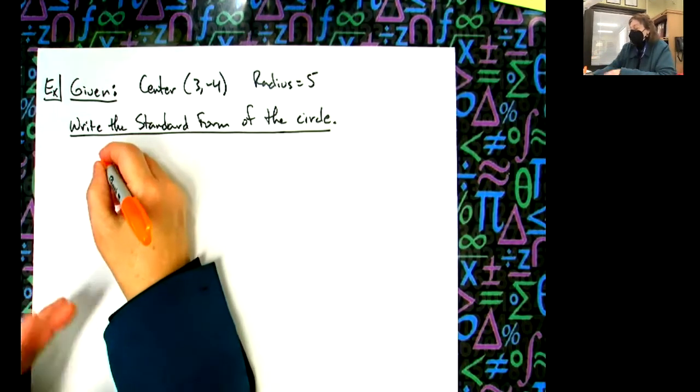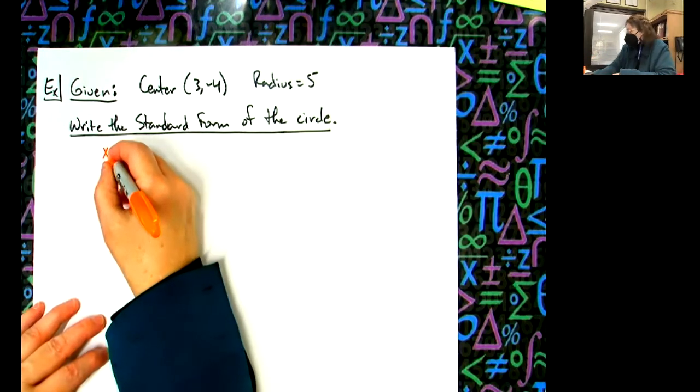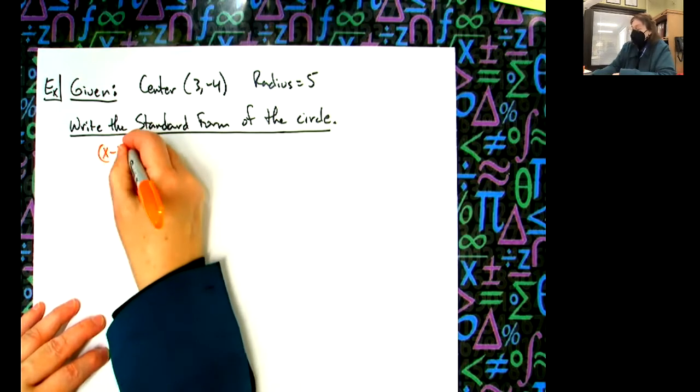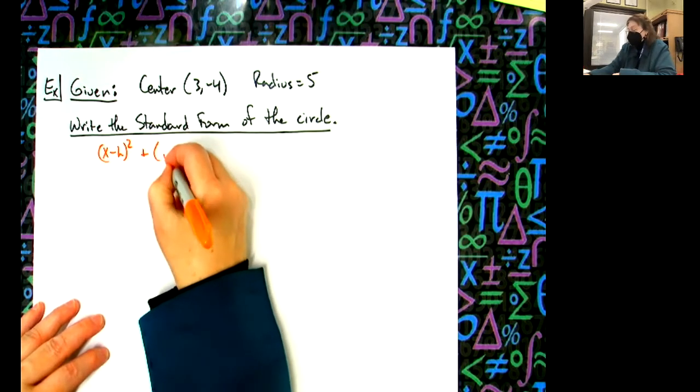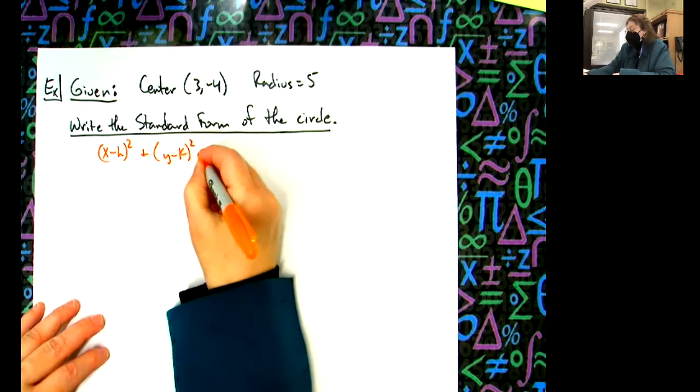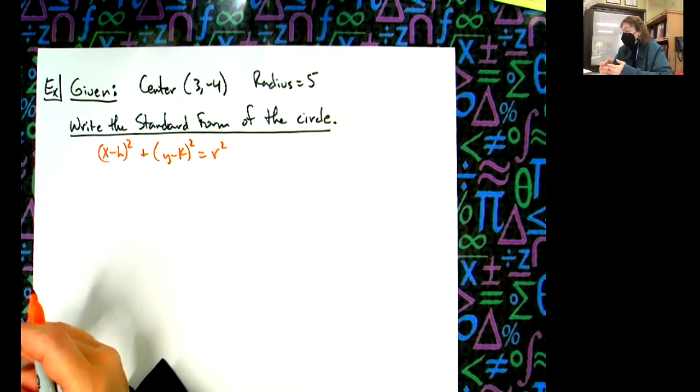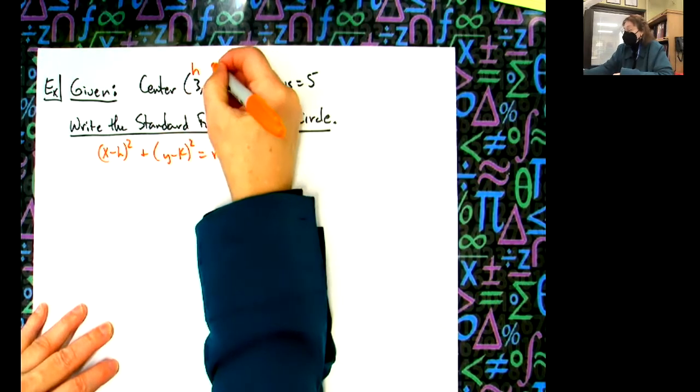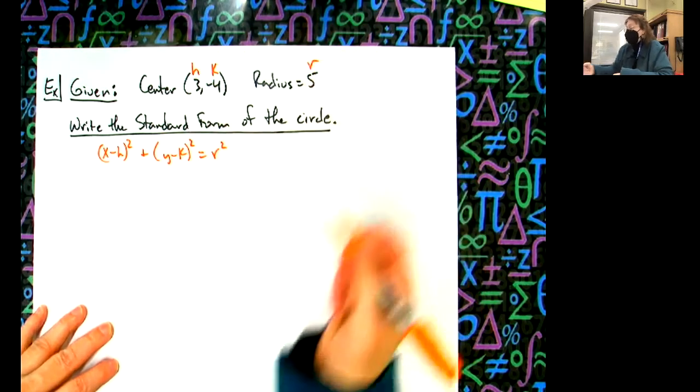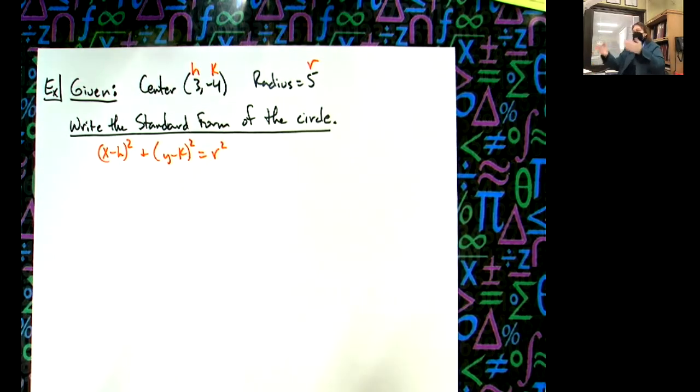I'm going to write the standard form formula down so we can see it. It's (x - h)² + (y - k)² = r². That's our formula. Here's my h, here's my k, and this is my r. Because of the way the formula is written, we do opposites.